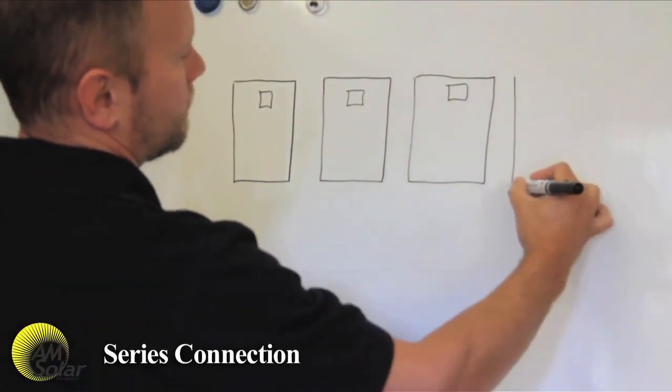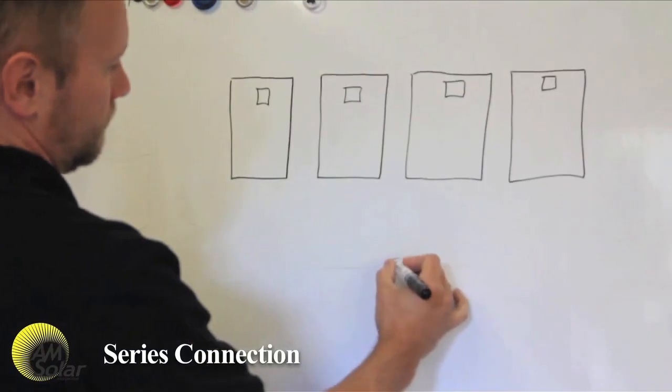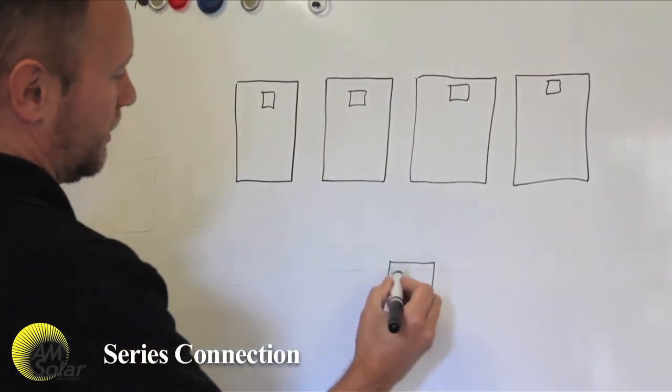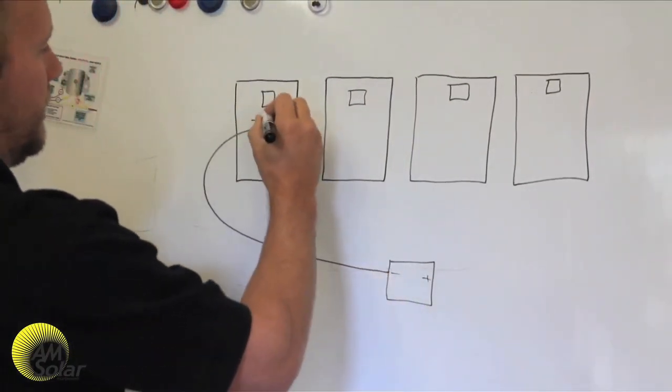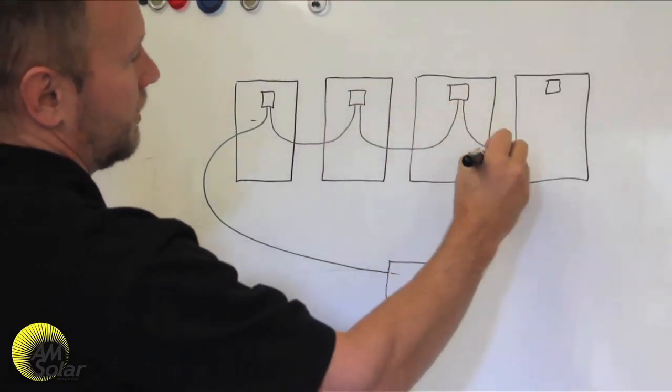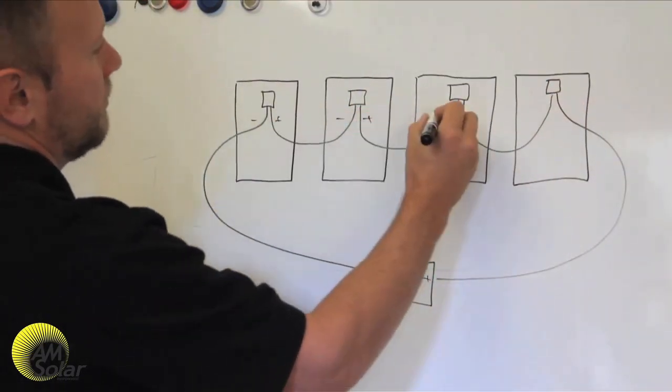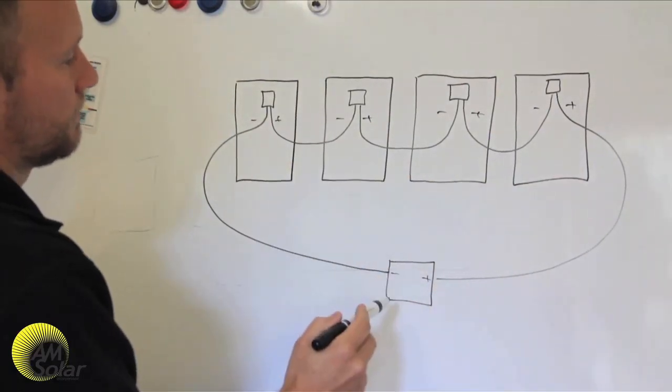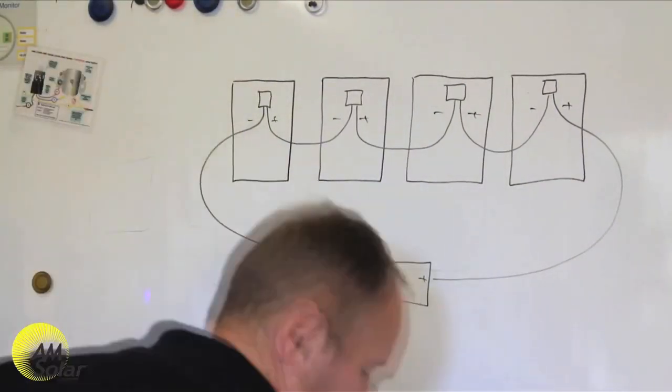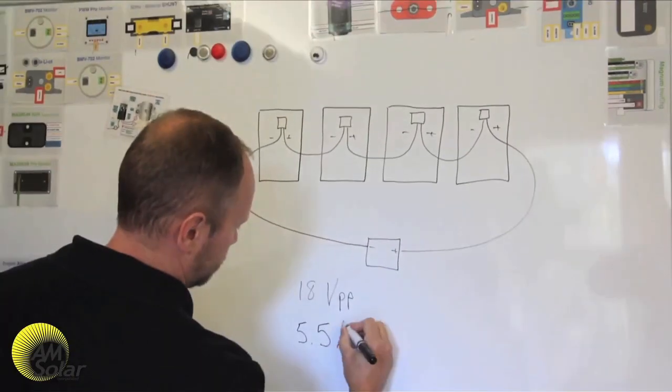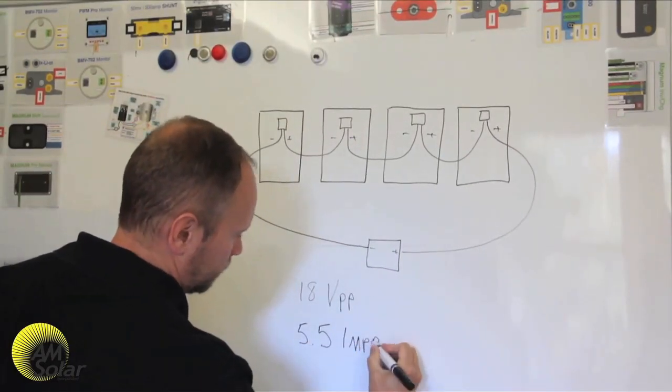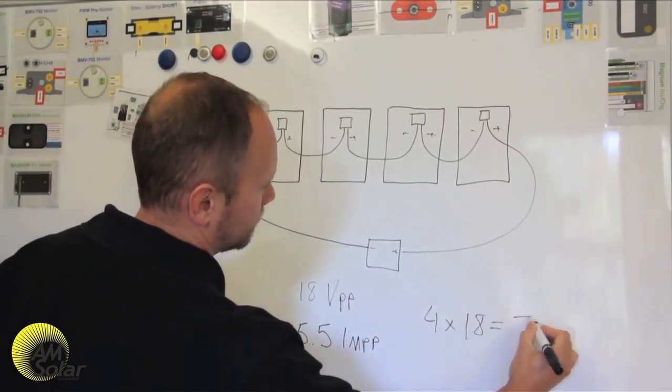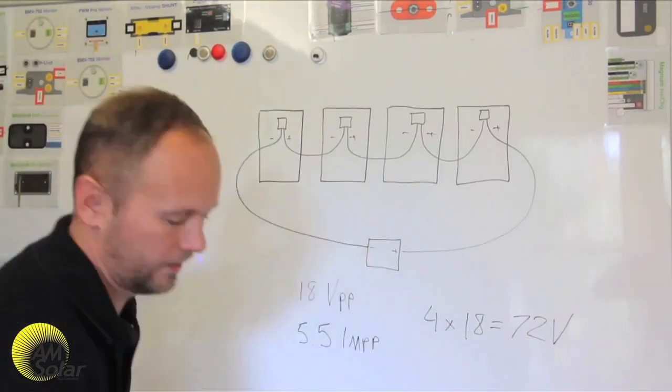A series connection is when you have two or more panels connected positive to negative in a chain. In this orientation, the charge controller sees a voltage that is the sum of all the solar panels and a current that is the same as the current going through a single panel. If you had four 100 watt panels, each with a VMPP of 18 volts and an IMPP of 5.5 amps, your charge controller would see 5.5 amps at 72 volts.